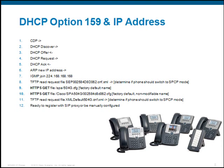If the phone receives DHCP option 159 from the DHCP server, you'll notice that steps 9 and 10 change again. Now it does an HTTPS GET and it looks for the same file name.